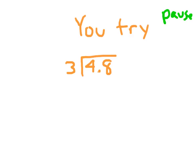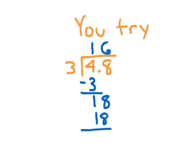We start with 3 going into 4 one whole time. 1 times 3 is 3. 4 minus 3 is 1. And we bring down the 8. For our answer, we put a 6 there as well. And some students forget this step here. 6 times 3 is 18. 18 minus 18 is 0. So there's no remainder.